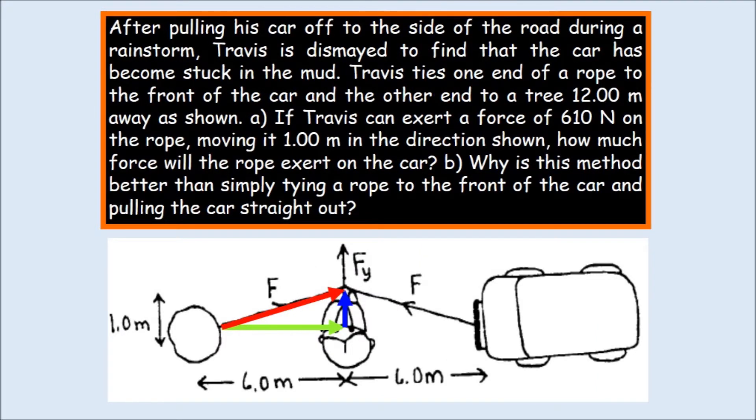Next, after pulling his car off to the side of the road during a rain storm, Travis is dismayed to find that the car has become stuck in the mud. Travis ties one end of the rope to the front of the car and the other end to a tree, 12 meters away as shown. If Travis can exert a force of 610 Newtons on the rope, moving it one meter in the direction shown, how much force will the rope exert on the car?